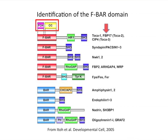A similar tandem arrangement of an FCH domain and a coiled-coil region had been observed in several other proteins. Database searches, primary sequence analysis, and structural prediction convinced us that the FCH domain with its flanking coiled-coil region formed a single folded module that was reminiscent of the BAR domain. We hypothesized a structural and functional similarity of this domain to classical BAR domains, and we called this module the F-BAR domain.